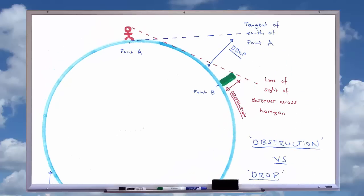Another way of thinking about this is that at literal surface level, the drop and the obstruction caused by the curvature of the earth are identical. Above literal surface level, the observer will be able to see some of the area which has dropped, although there may still be a measurable and predictable amount of obstruction.